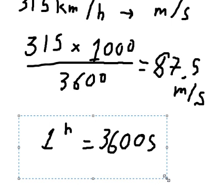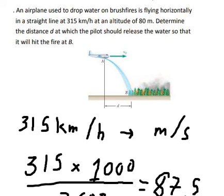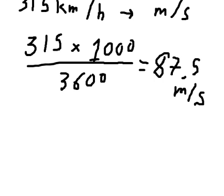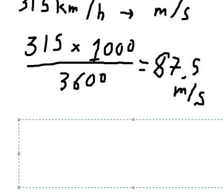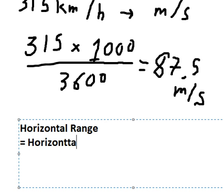Next, the question asks us to find D. D is the horizontal range. The formula is horizontal velocity multiplied by time of flight.